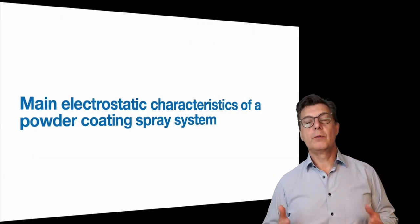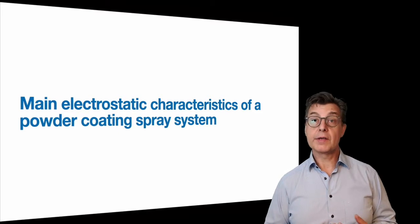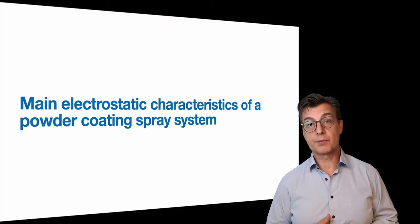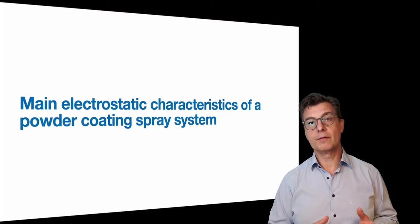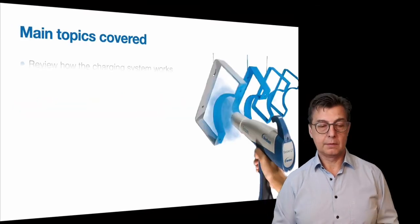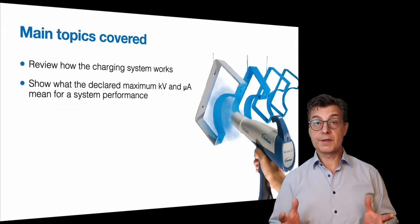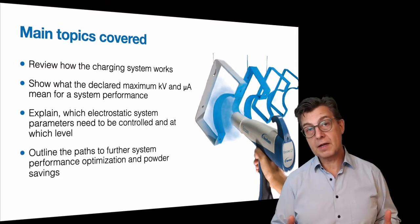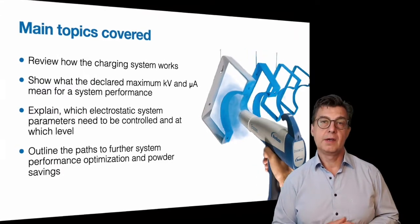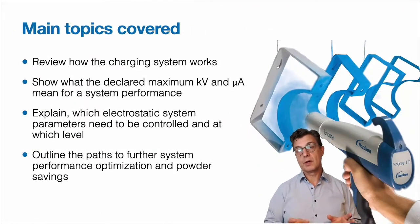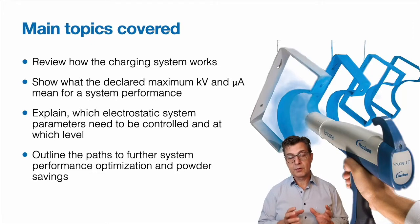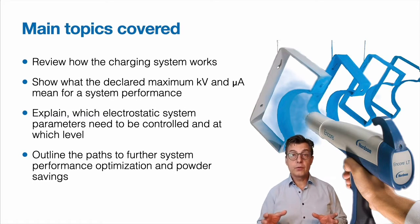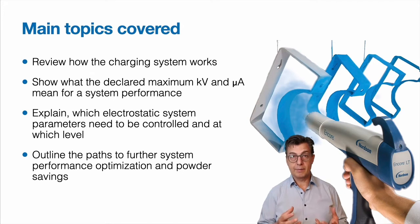Hello. In this short video, I will explain the main electrostatic characteristics of a powder coating spray system — the KVs and the microamps, the voltage and current. We will review how the charging system works, show what the declared maximum voltage and current actually mean for spray system performance, explain which electrostatic system parameter is actually the most important to control and at which level, and outline the path to future spray system performance optimization for maximum powder savings and the best finish quality.